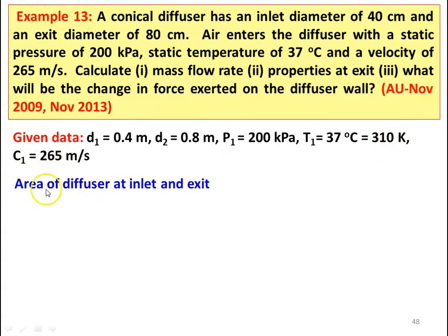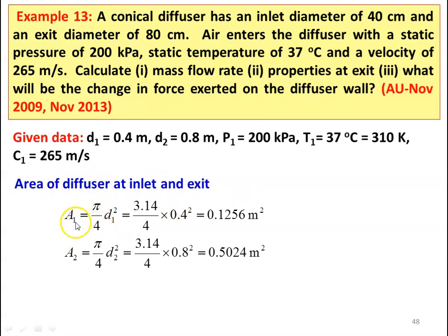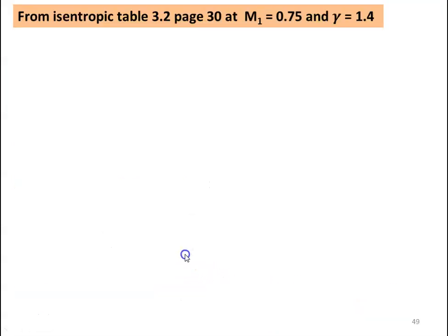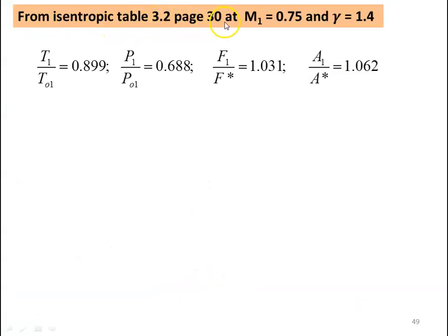We calculate the area of the diffuser at the inlet and outlet: A1 equal to pi by 4 into D1 square, which is 3.14 divided by 4 into 0.4 square, equal to 0.1256 meter square. A2 equal to pi by 4 into D2 square, which is 3.14 divided by 4 into 0.8 square, equal to 0.5024 meter square. The Mach number at inlet: M1 equal to C1 divided by square root of gamma R T1, which is 265 divided by square root of 1.4 into 287 into 310, equal to 0.75. From isentropic table 3.2 at M1 equal to 0.75 and gamma equal to 1.4, we take T1/T01 equal to 0.899, P1/P01 equal to 0.688, F1/F* equal to 1.031, and A1/A* equal to 1.062.